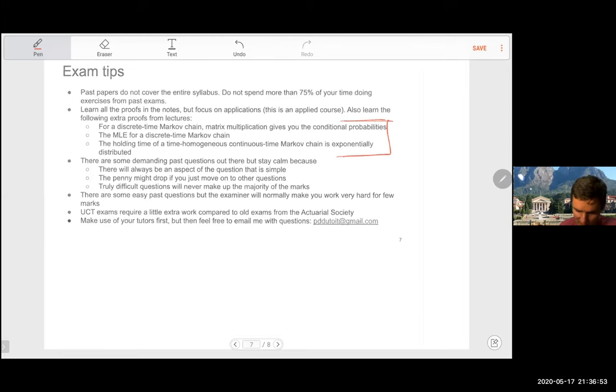The fourth bullet says there are some easy past questions, but the examiner will normally make you work very hard for very few marks. And there's definitely an element of these questions, of some of this content that is very easy. But the moment you see a very easy question, you'll normally see you have to multiply out four matrices for three marks. So don't get overly excited if you see an easy question. UCT exams definitely require a little bit more extra preparation and understanding than the actuarial society exams. Historically, I think this is true, at least for this section. And as I just repeated my email address over there.